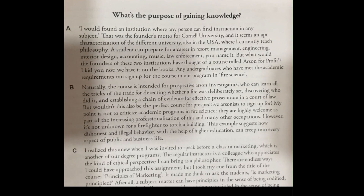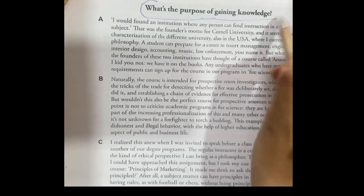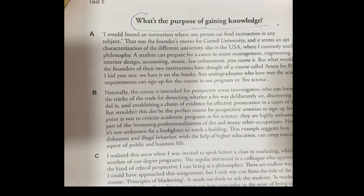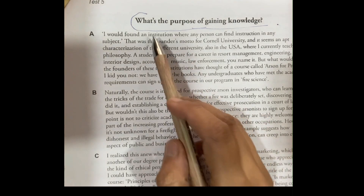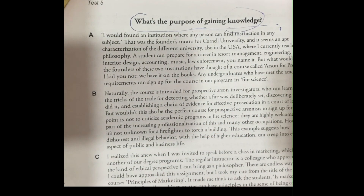So the first tip is that you will read the title. When you read the title, you can make an estimate of 80% of what the passage is about. Our title is: 'What's the purpose of gaining knowledge?' This could talk about books, courses, institutions, some management, or different types of education.